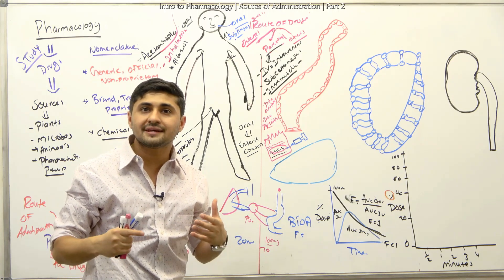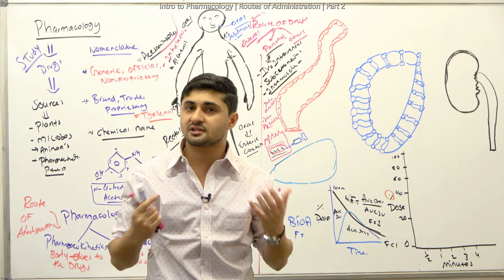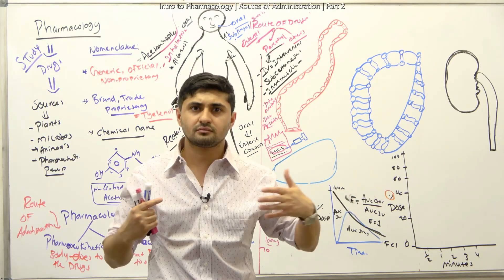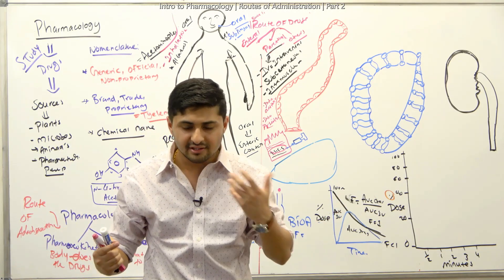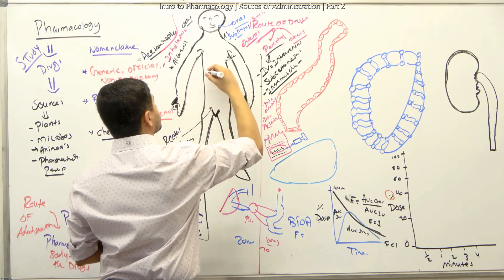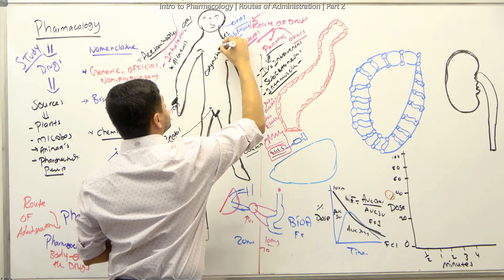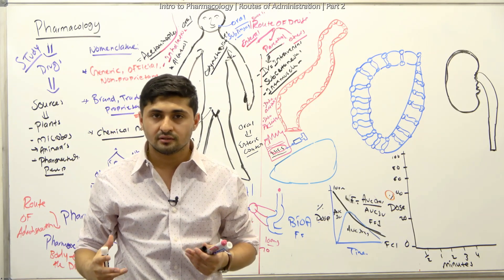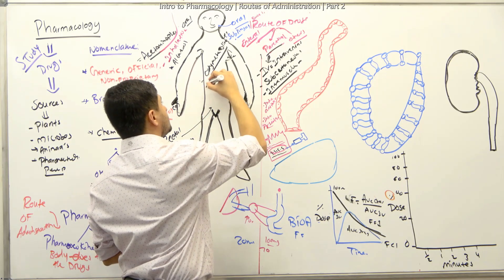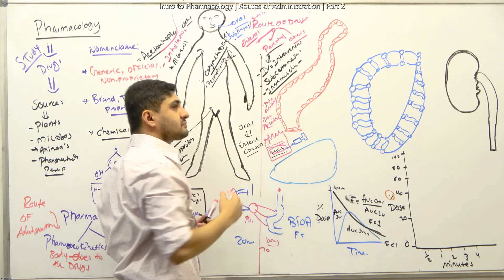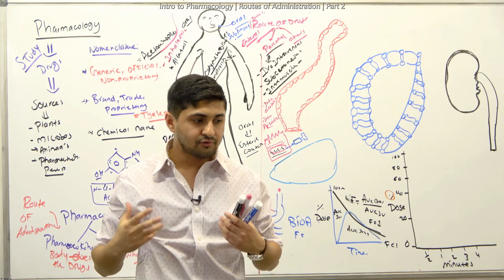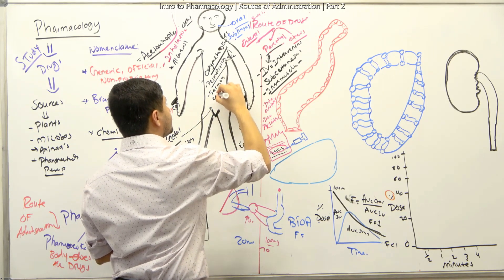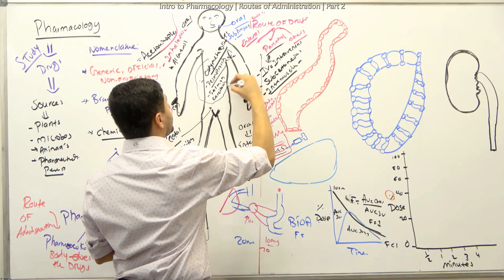We also have nasal inhalations. These include nasal decongestants — for example, oxymetazoline, which you put through your nose to avoid congestion. There are also nasal drugs for diabetes insipidus, like the nasal version of desmopressin. And for osteoporosis, there is a nasal version of a drug called salmon calcitonin. So these are examples of nasal inhalations.